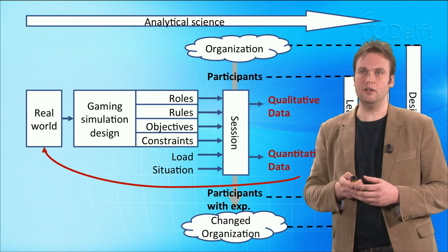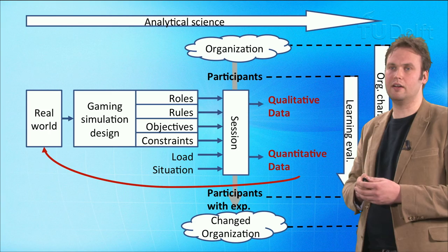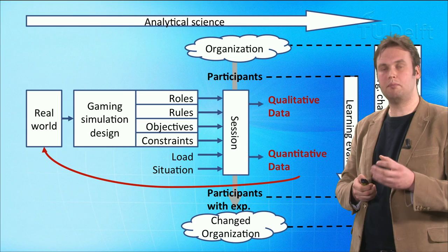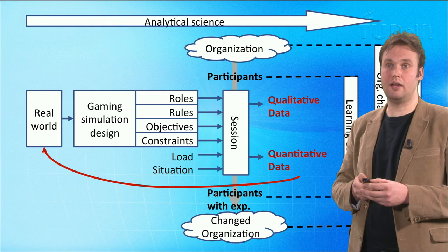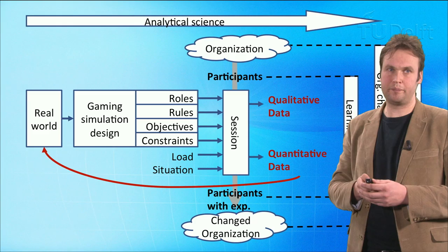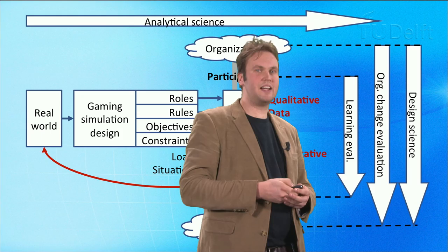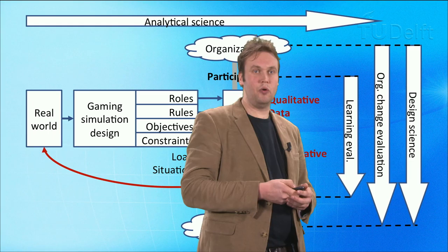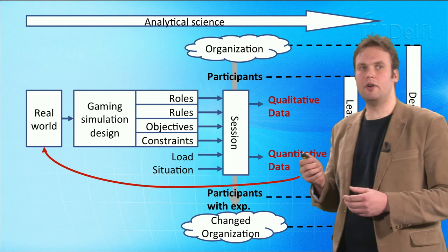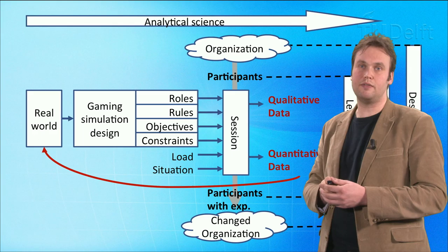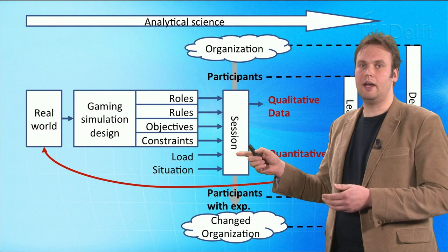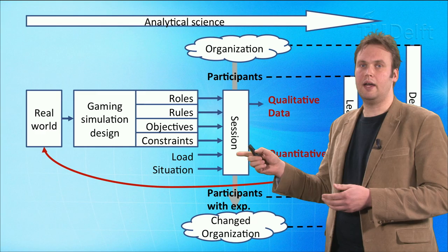Looking from left to right in this picture, there are qualitative data and quantitative data. Getting data out of the play — out of what people do — is a fairly new scientific method in approaching games. We now see them as experiments. From top to bottom we are in a design science logic, evaluating the change of organisations or evaluating learning over the game. Whereas from left to right we are in an analytical science fashion, where we try to say something about the real world using the data generated in the game session — represented by the red feedback loop at the bottom.